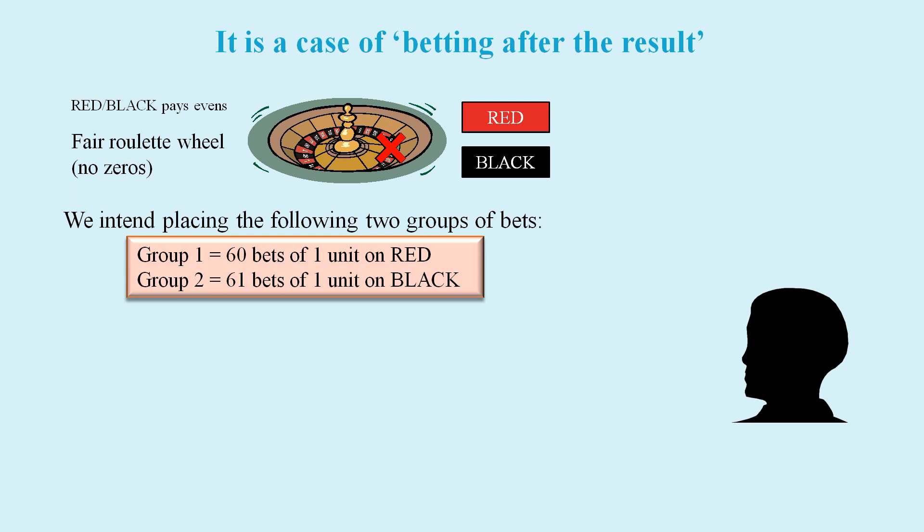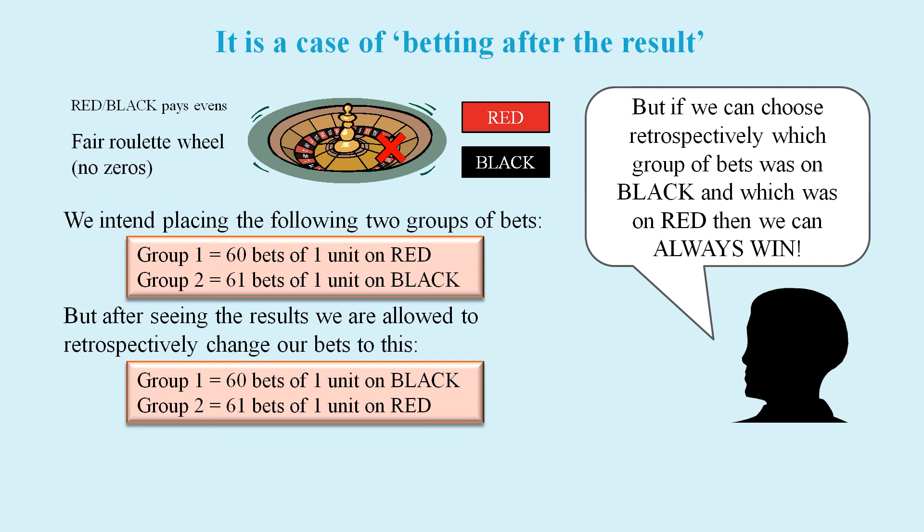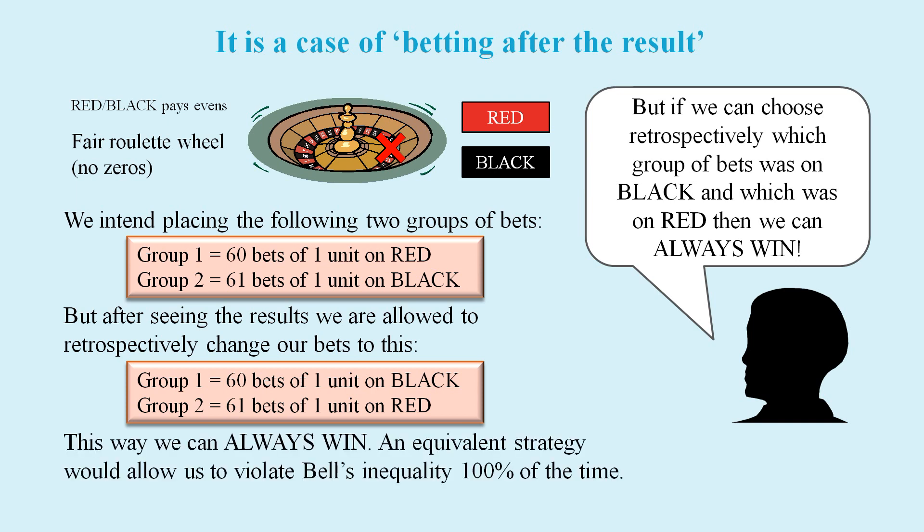If we are in profit after these 121 bets, then that's great, we've won. But if we are not in profit, then suppose that we could retrospectively switch the bets on red to have been bets on black and vice versa. This way we can guarantee that we always win, or that we always violate the inequality.